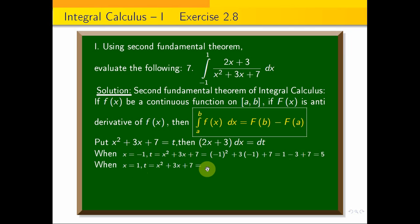When x equals 1, t = 1² + 3(1) + 7, which equals 1 + 3 + 7, equal to 11. So the upper limit is 11.